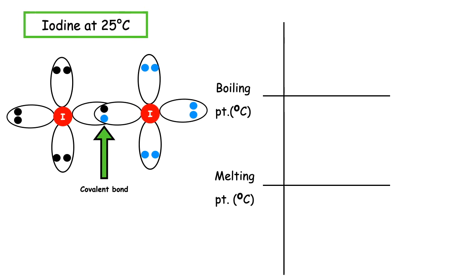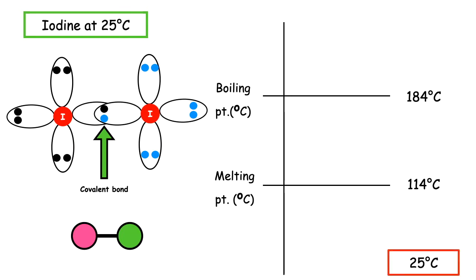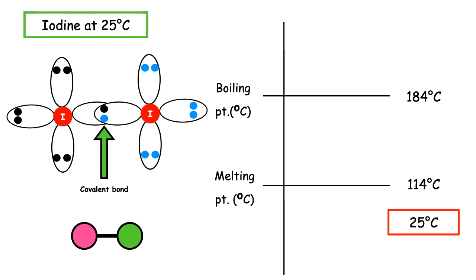Iodine again has the same shape of molecule. The melting point of iodine is 114 degrees Celsius and the boiling point is 184 degrees Celsius. Where would 25 go on that scale? 25 is smaller than 114, so it would go below the melting point on the scale, which tells us that iodine is a solid at room temperature.